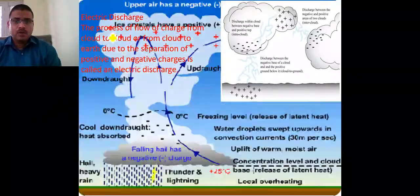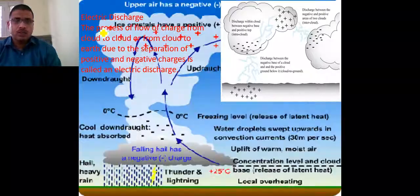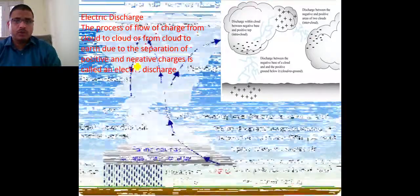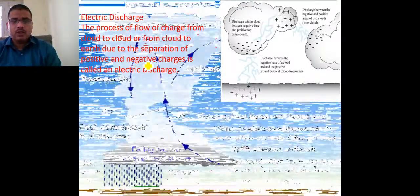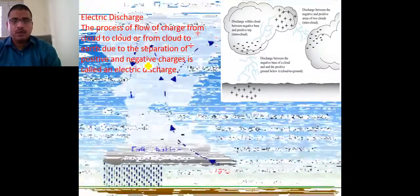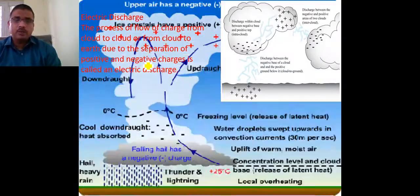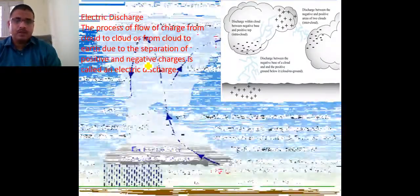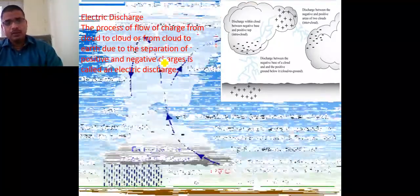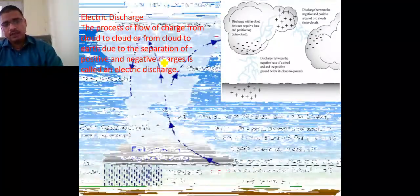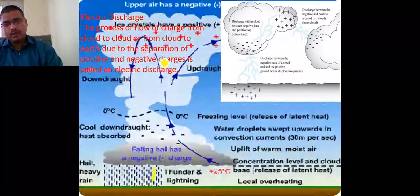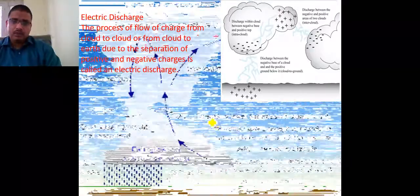The electric discharge is the process of charge flowing from cloud to cloud or from cloud to earth, due to the separation of positive and negative charges. When the magnitude of charges becomes very high, the charges discharge through positive and negative interactions, and the remaining high-magnitude charges are attracted by the earth.